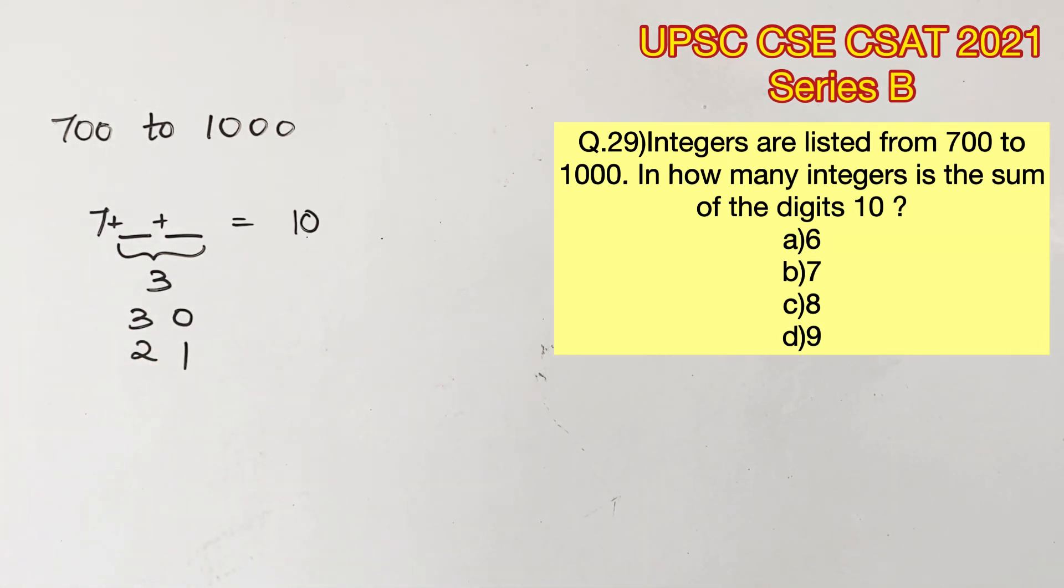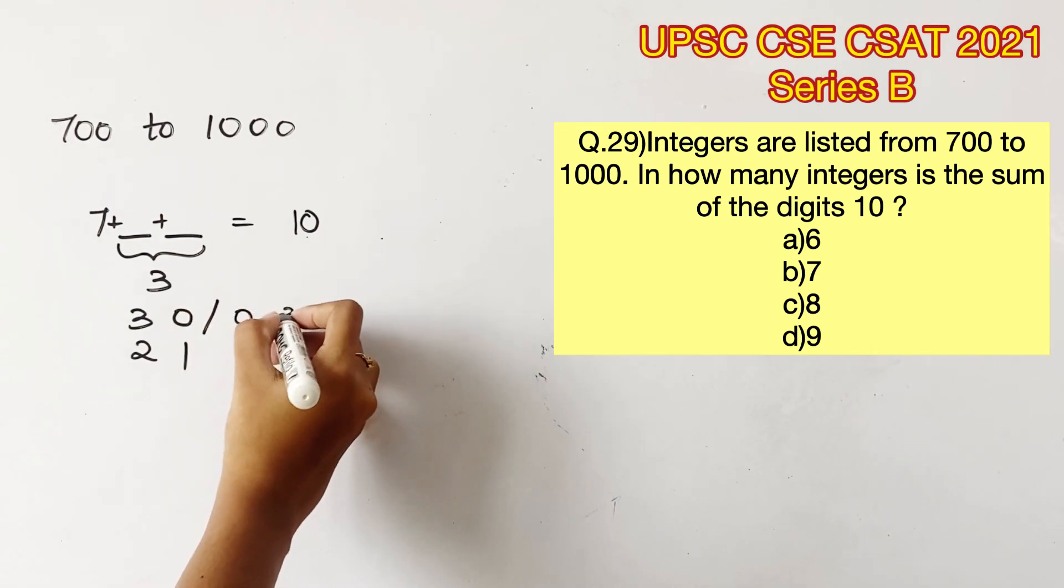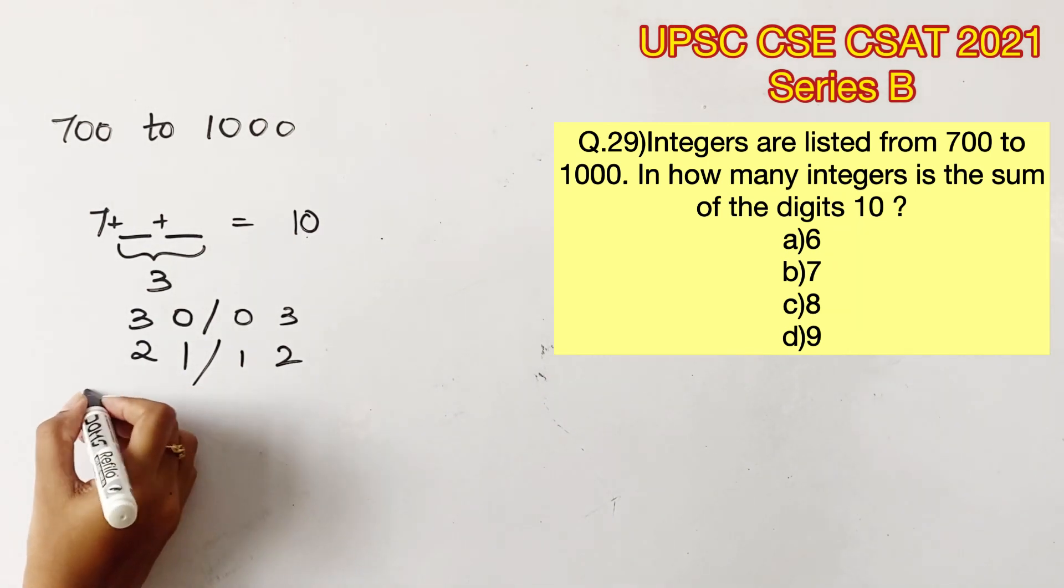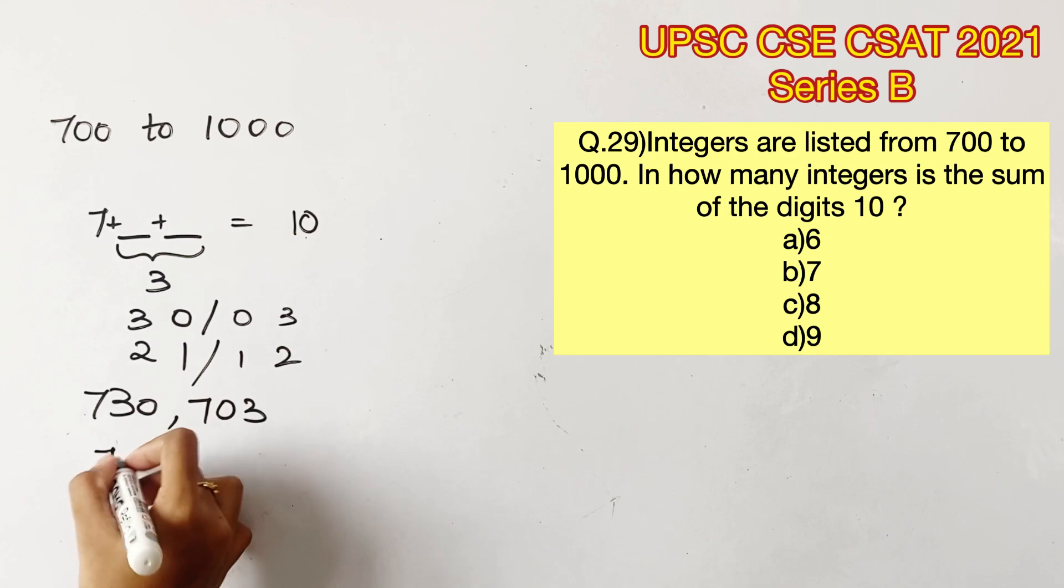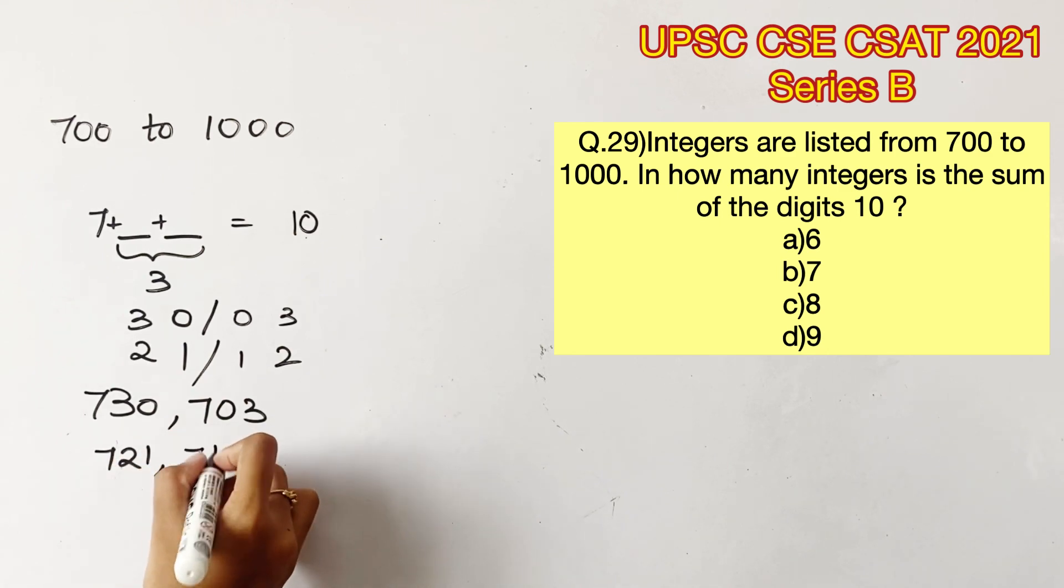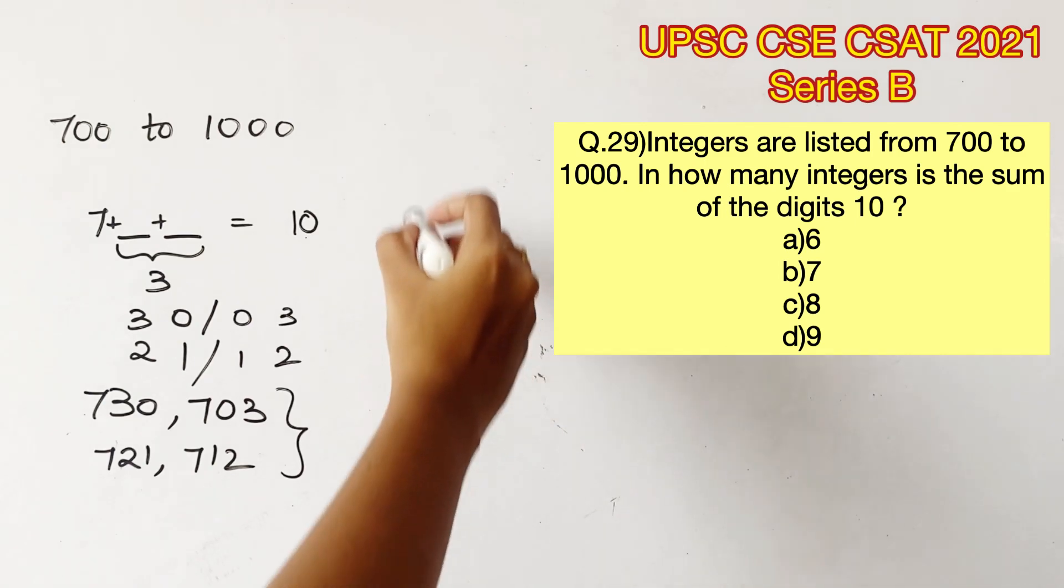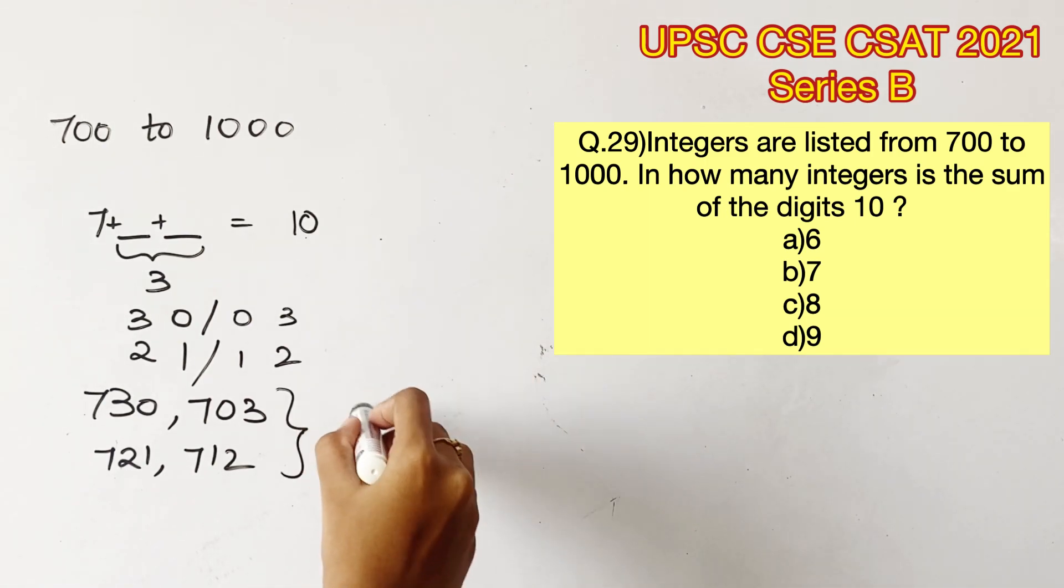3 and 0 or 2 and 1, which can also be reversed and be written as 0, 3 or 1, 2. There are no other possibilities that would add up to 3. Any value higher than this would sum up to a value higher than 3. So the possibilities between 700 and 799 are 730, 703, 721 and 712. So there are four possibilities for 700 to 799.